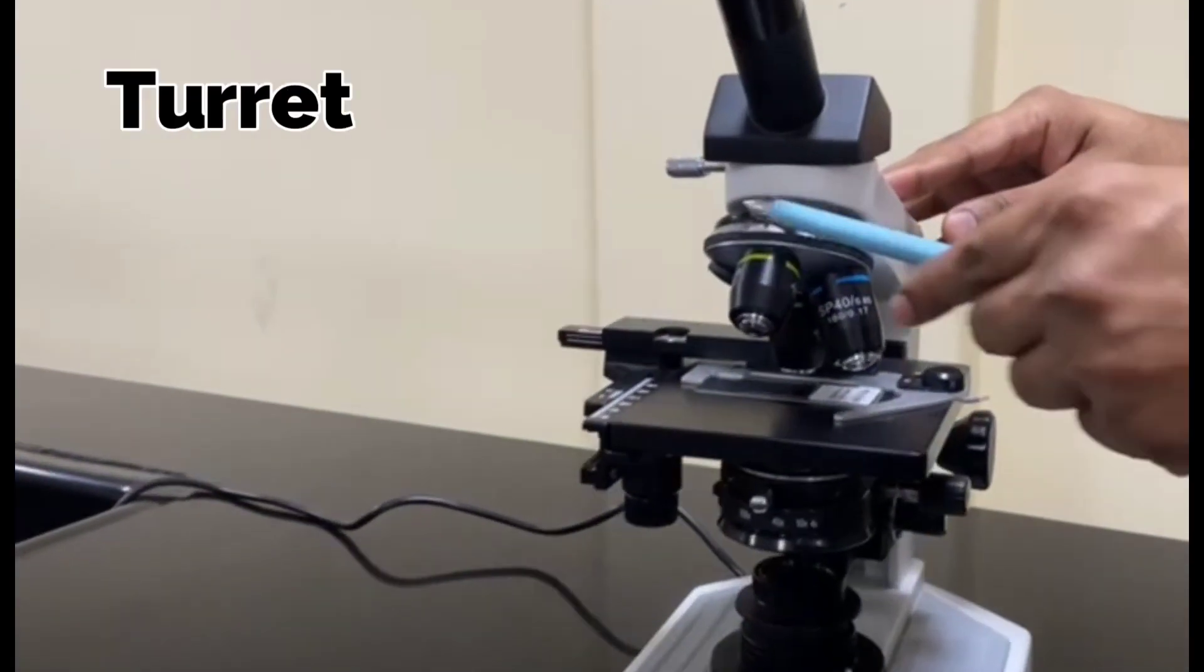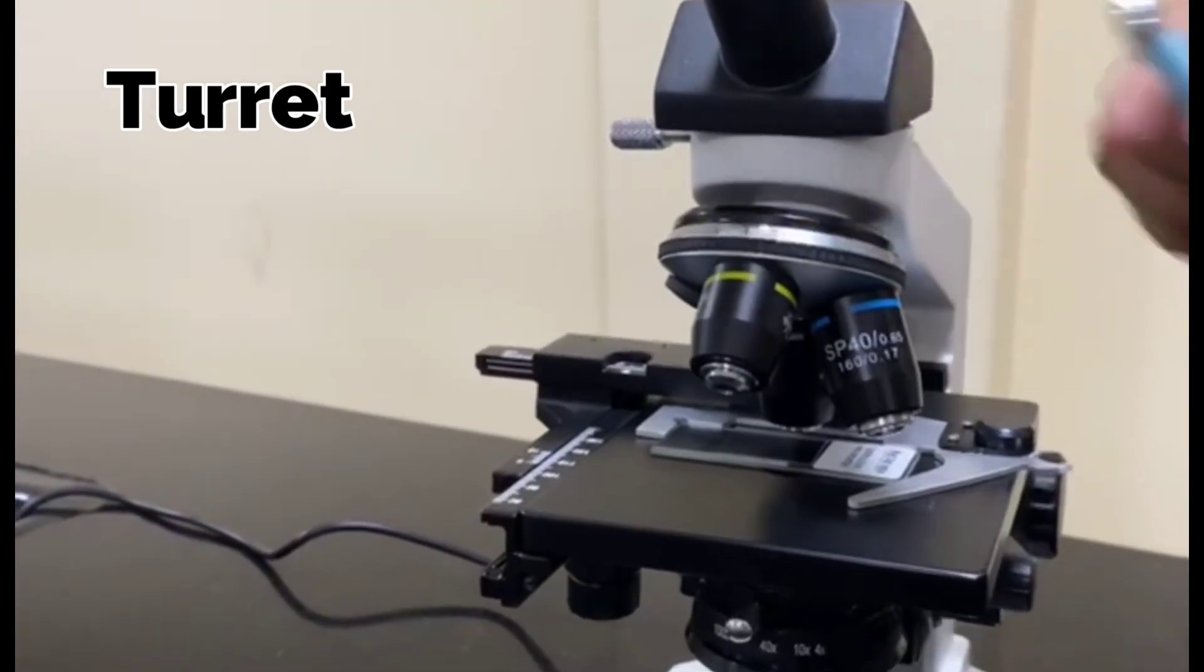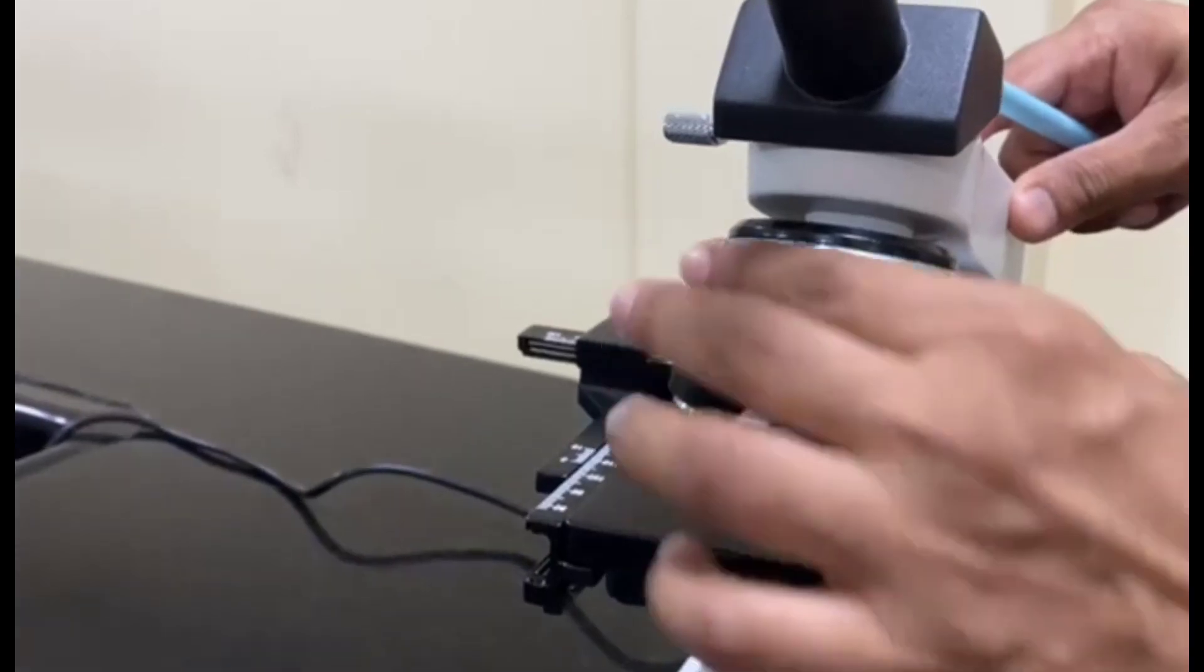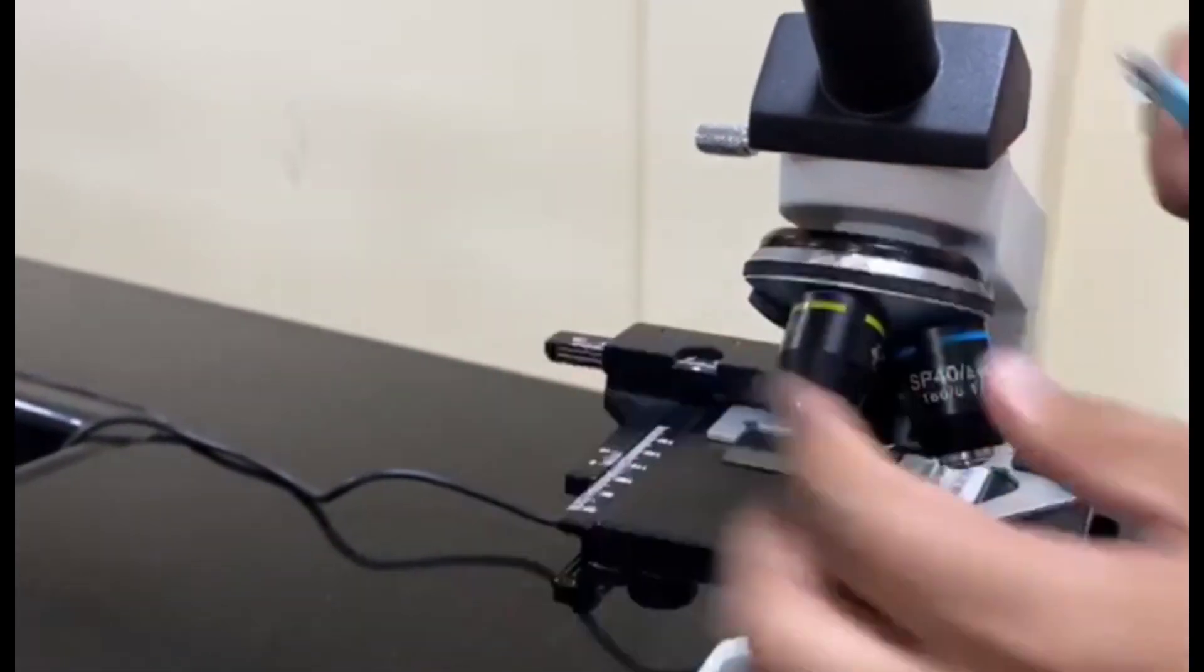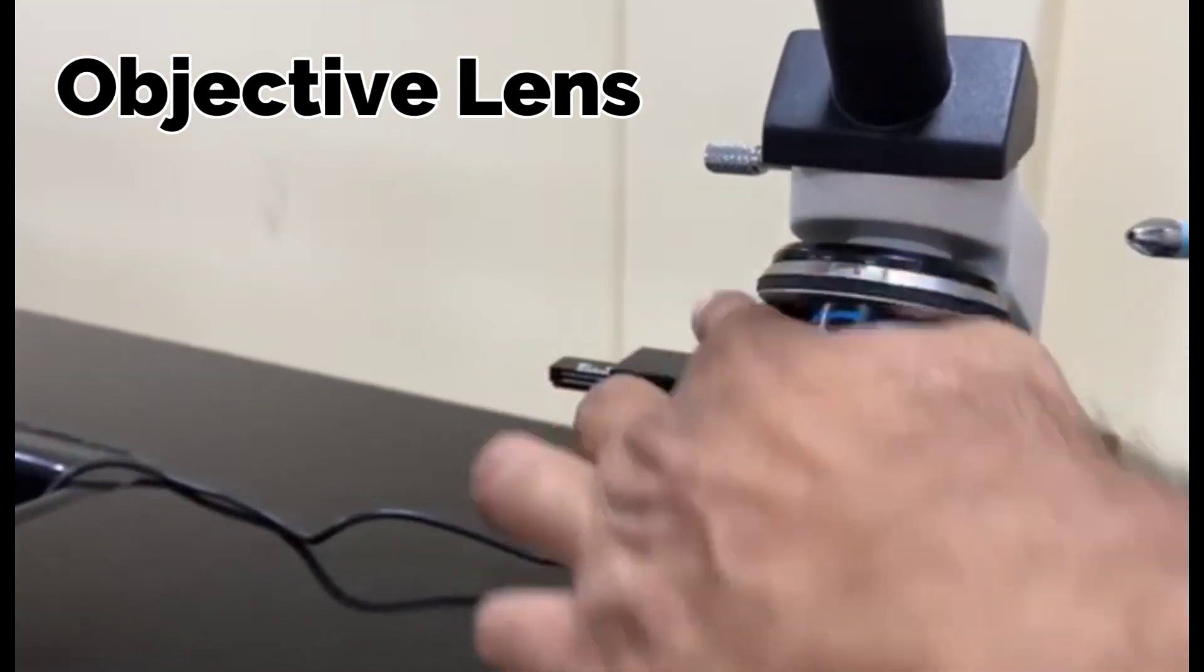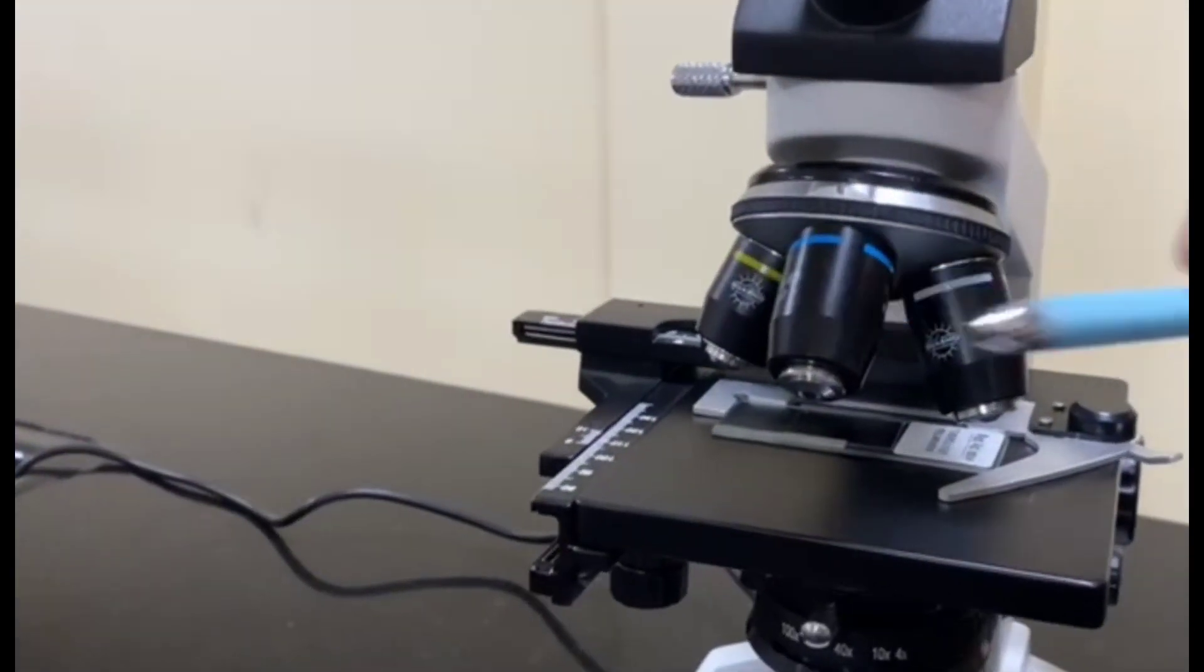Come to this part of the microscope. This is a turret where you can see different objective lenses are attached, and you can revolve this turret to position the different magnification power of objective lens.